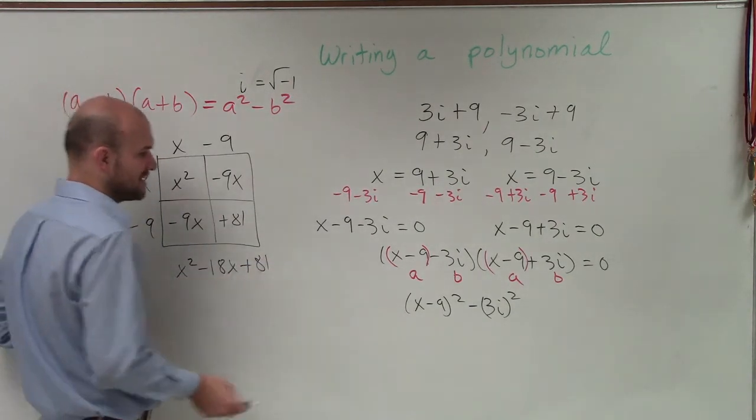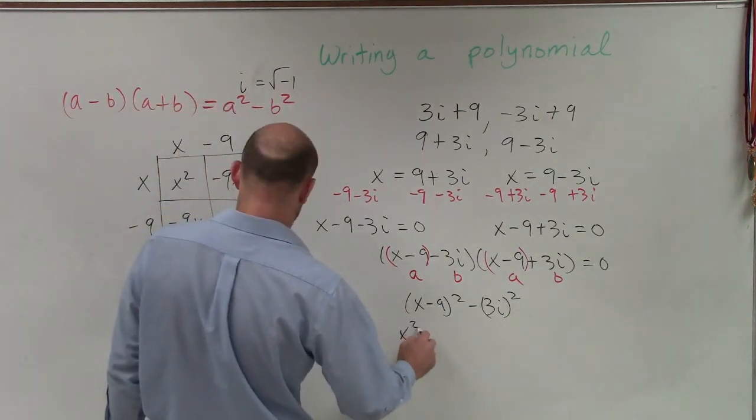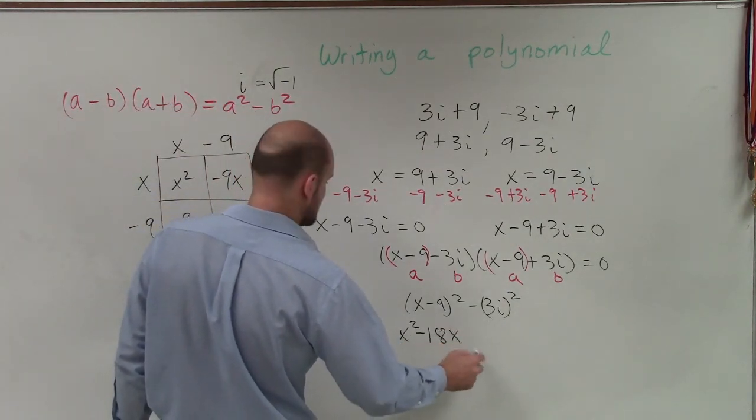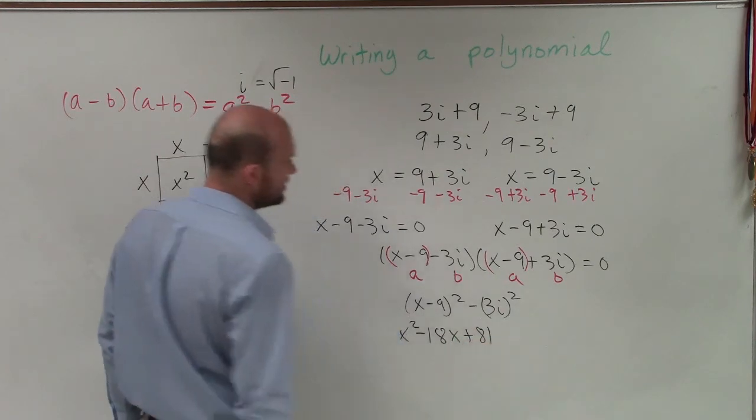Multiply the last term, double the second. So therefore, I have x squared minus 18x plus 81.